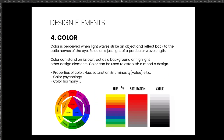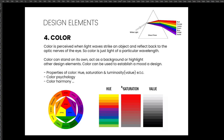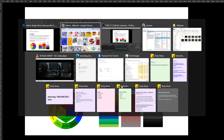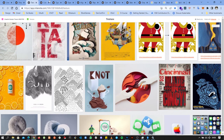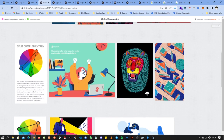Color is quite important. Color is perceived when light waves strike an object and reflect back to the optic nerves of the eye — basically, color is light of a particular wavelength. Color can stand out on its own, act as a background, or be used to highlight other design elements, and it can establish a mood in a design. When studying colors we look at properties such as hue, saturation, and luminosity, as well as color psychology, the emotions color can evoke, and color harmony — how to use colors together and which colors work best with each other.